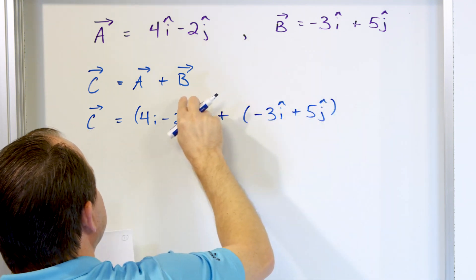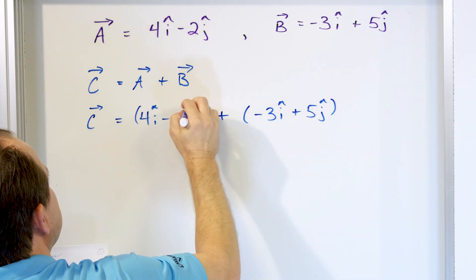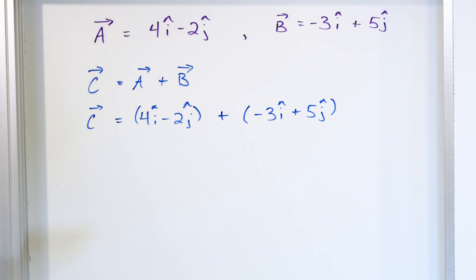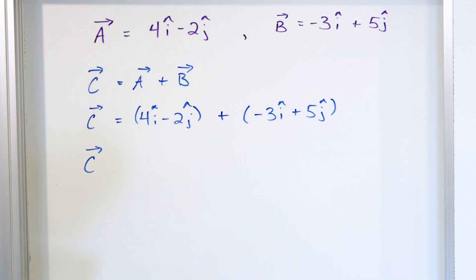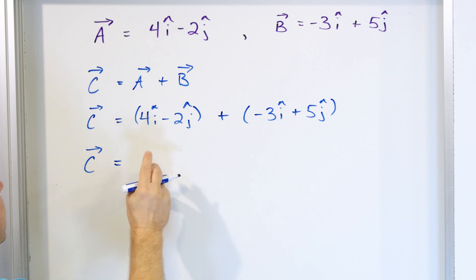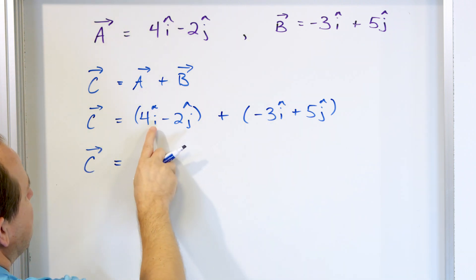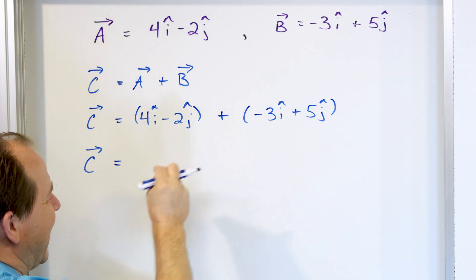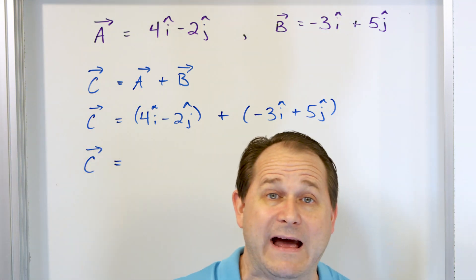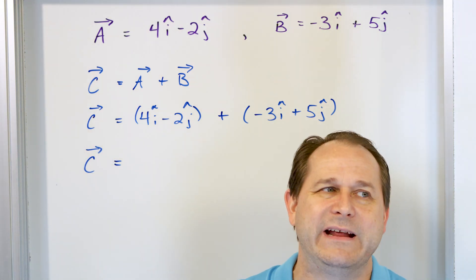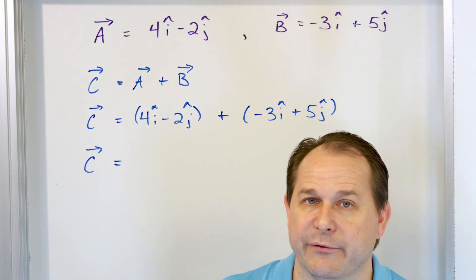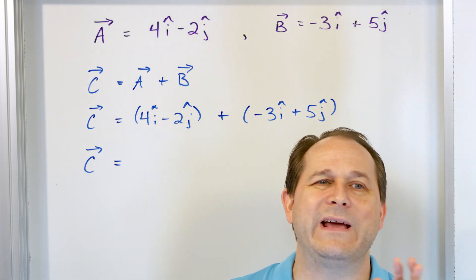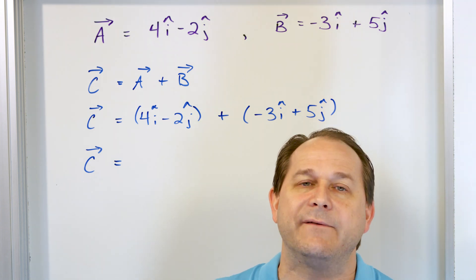Of course, I'm putting the hats on the unit vectors. Now you can drop the parentheses. This is going to behave just like any algebraic expression — the i's and j's are the like terms, and you add the coefficients. i and j are not really variables, of course; they're unit vectors. But when we add things together in math, we have to have like terms.